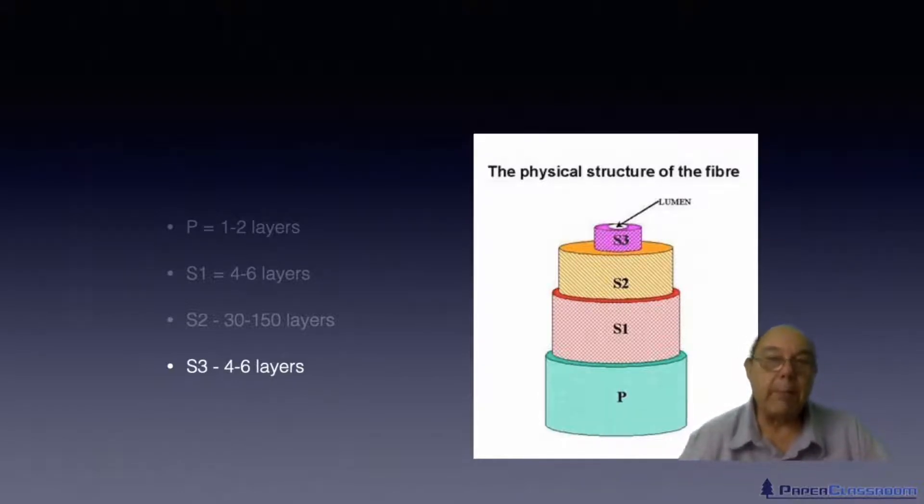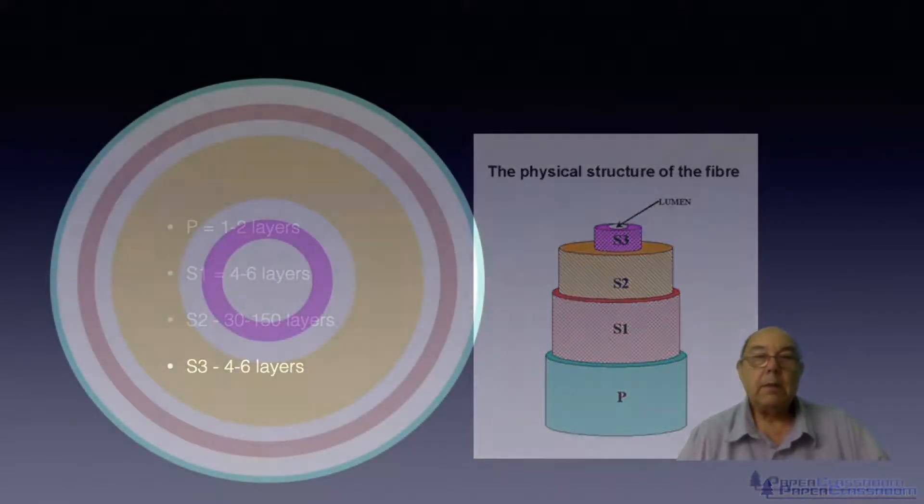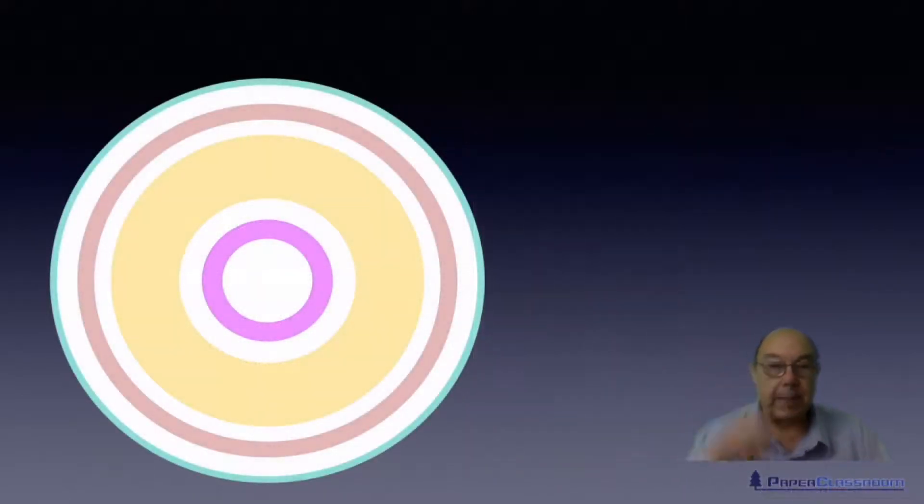If we turn that fiber on its end now, this is the sort of thing that we would see. So the very thin green band there would represent the primary wall. The white would represent a bit of a gap. It's not really a gap, it's just less dense with cellulose.